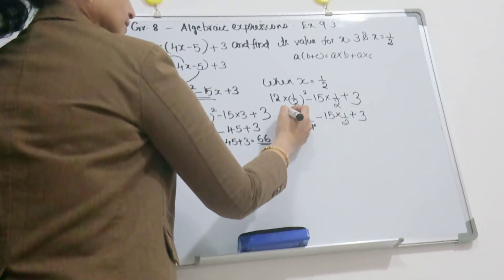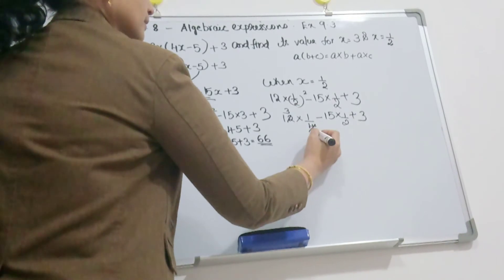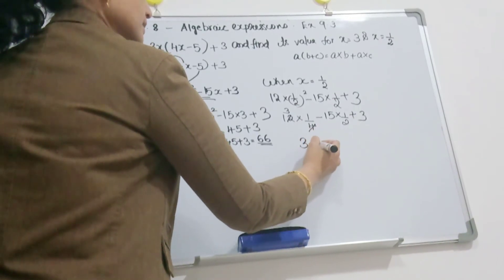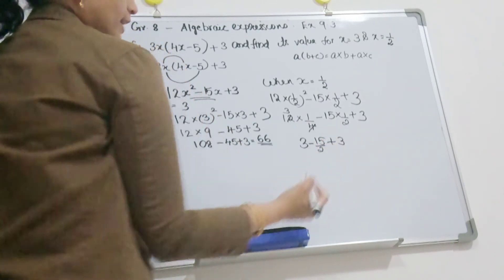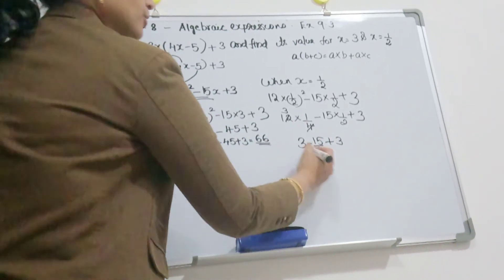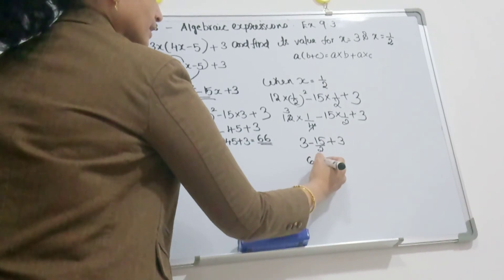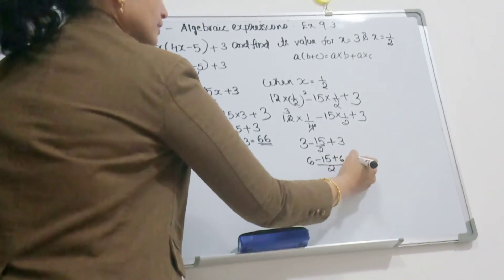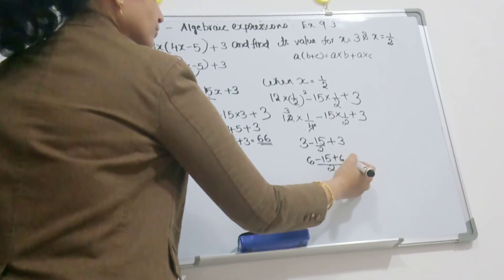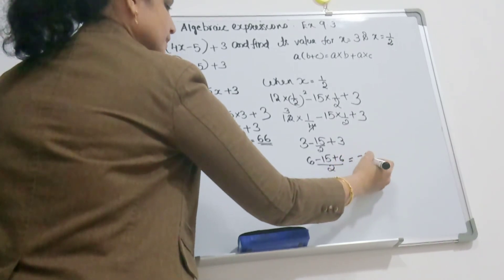You can simplify this. So 3 minus 15 by 2 plus 3. Find the LCM. LCM is 2. So 3 into 2 is 6 minus 15 plus 6 by 2. This is equal to 6 plus 6 is 12, 12 minus 15 is minus 3 by 2.